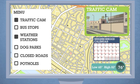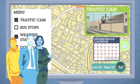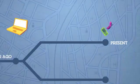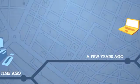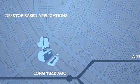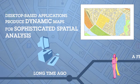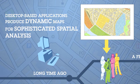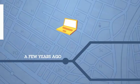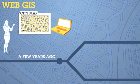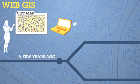But GIS didn't always work this way. It was initially comprised of desktop-based applications that produced dynamic maps for sophisticated spatial analysis. These early maps were not accessible to the general public. But out of desktop GIS evolved the second wave — web GIS — utilizing the internet to add more capabilities.